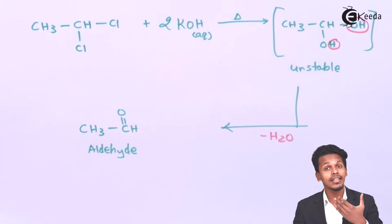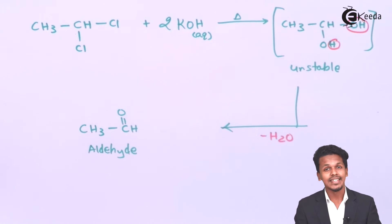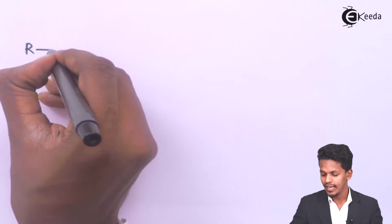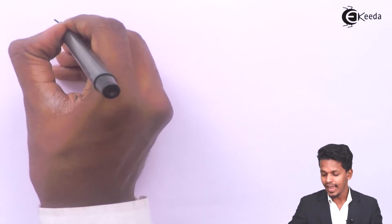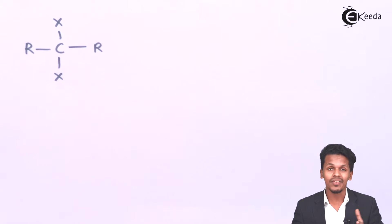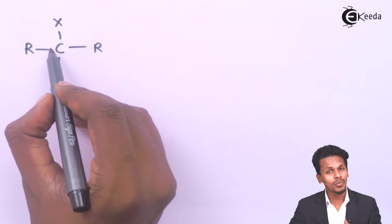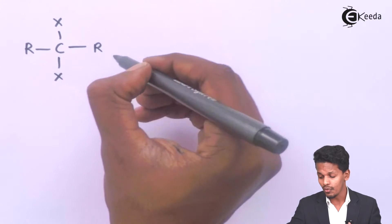Now let us understand the other type of geminal dihalide from which we can prepare ketones. To prepare a ketone, we consider a geminal dihalide in which the halide atoms are attached to a non-terminal carbon — one that is in the middle of the chain.